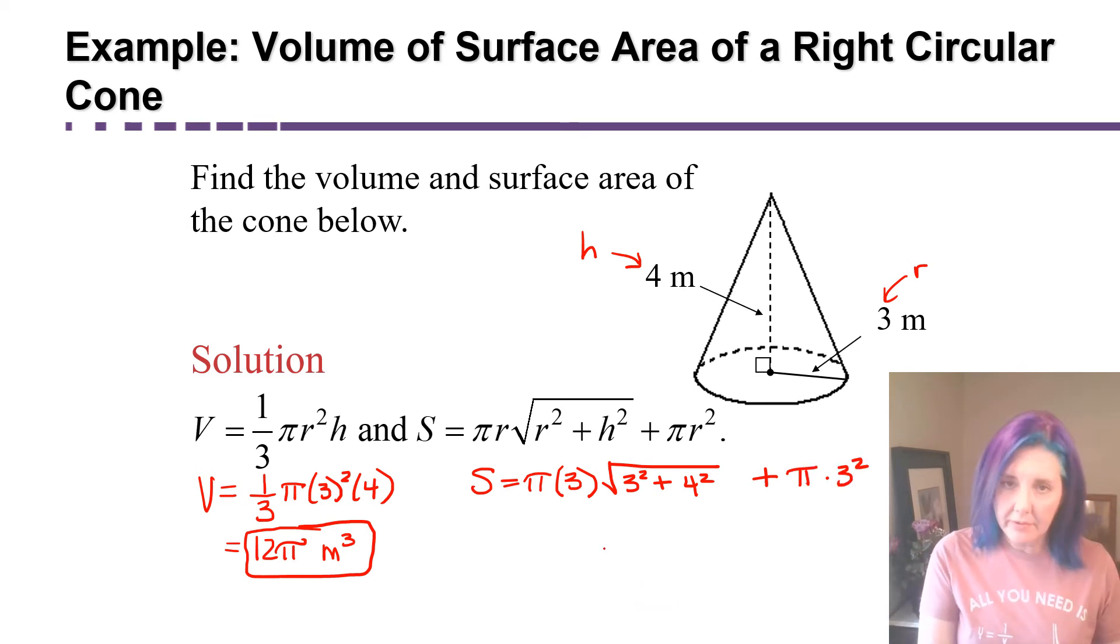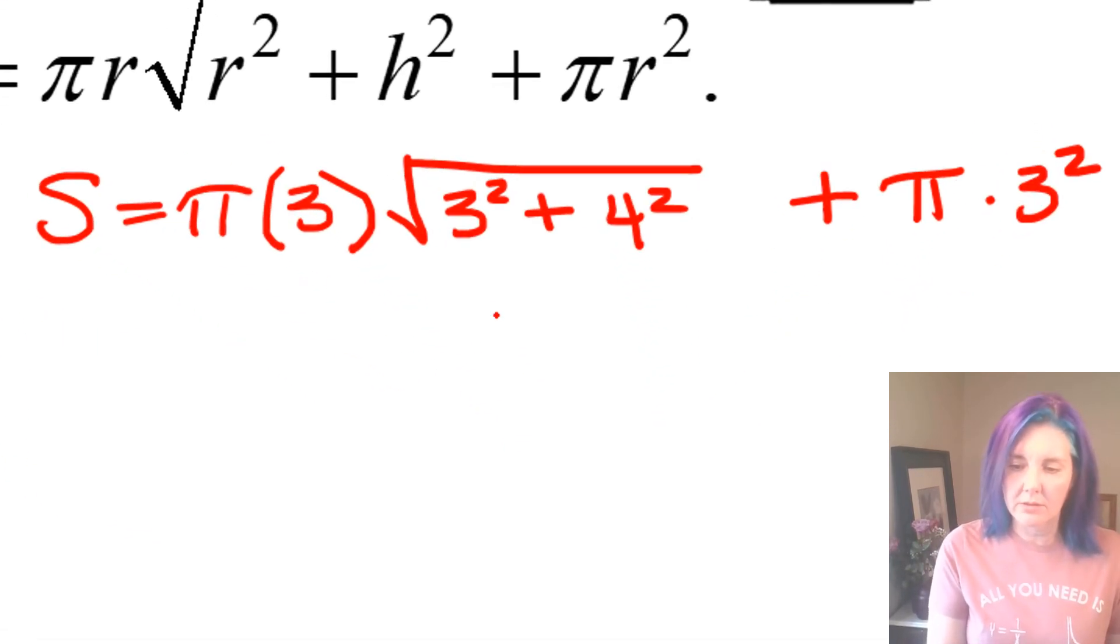All right, so there's a little bit of order of operations that you got to pay attention to here. Remember this square root is acting as a grouping symbol. Inside of that square root, we have addition, and we have what's called exponentiation, raising something to a power, an exponent. So you have to do the exponents before the addition. So I'm going to do this one step at a time.